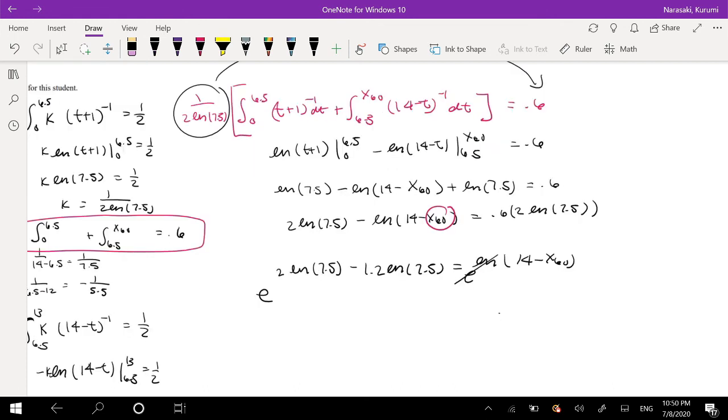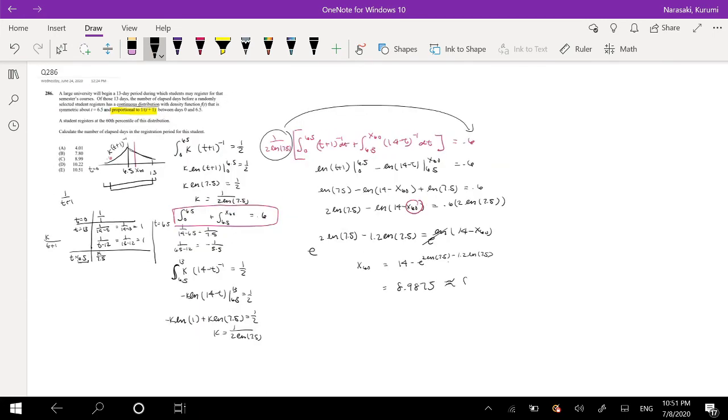So 14 minus e to the 2 natural log of 7.5 minus 1.2 natural log of 7.5. Let me type this into the calculator real quick. And this is equal to 8.9875, which is approximately equal to 8.99, which is your answer, c.